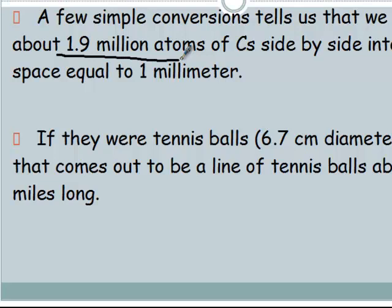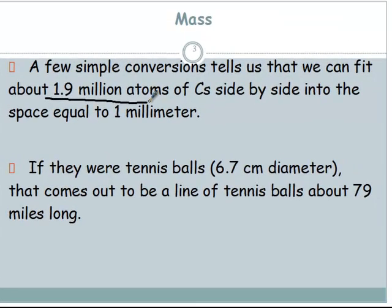Incomprehensibly small — almost 2 million graduations inside that little millimeter. I did another silly conversion: if they were tennis balls, which have about a 6.7 centimeter diameter according to Wikipedia, that comes out to about 79 miles long. So that's how many atoms there are in that tiny space if they were the biggest atom on the periodic table. My point is: